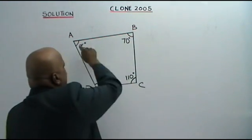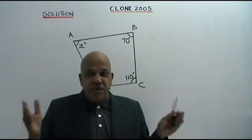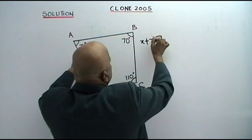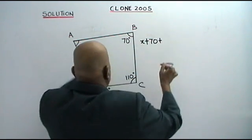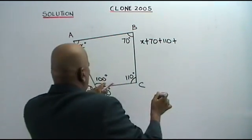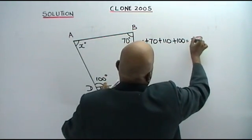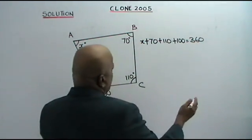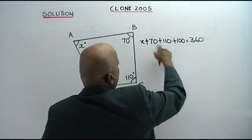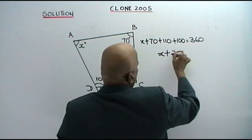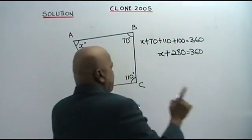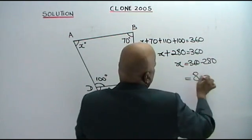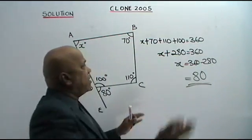That is the sum of the interior angles of a quadrilateral — you must remember that. So: X plus 70 plus 110 plus 100 is equal to 360. From here, X plus 70 plus 110 equals 180; 180 plus 100 equals 280. Therefore, X is equal to 360 minus 280.